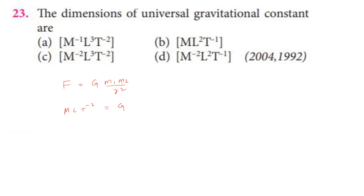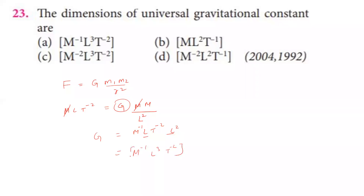G equals F times R² divided by M1 times M2. Force dimension is MLT⁻², R² gives L², and M1 M2 gives M². One M cancels, so G has dimension M⁻¹L³T⁻². The dimensional formula of universal gravitational constant is M⁻¹L³T⁻², so the first option is correct.